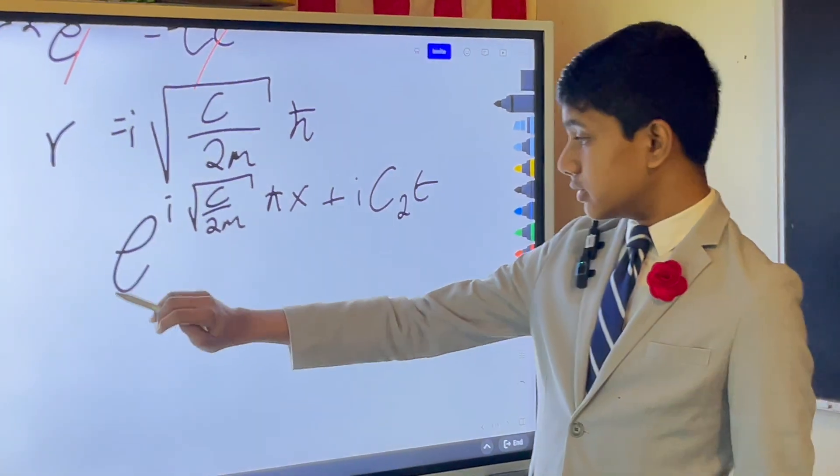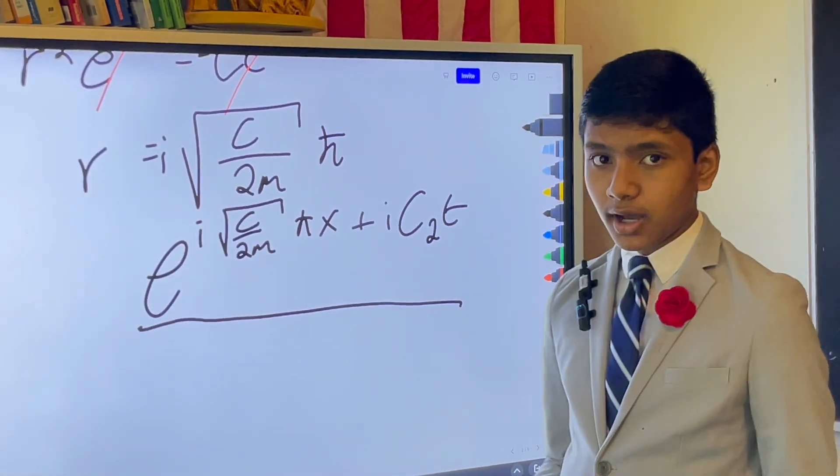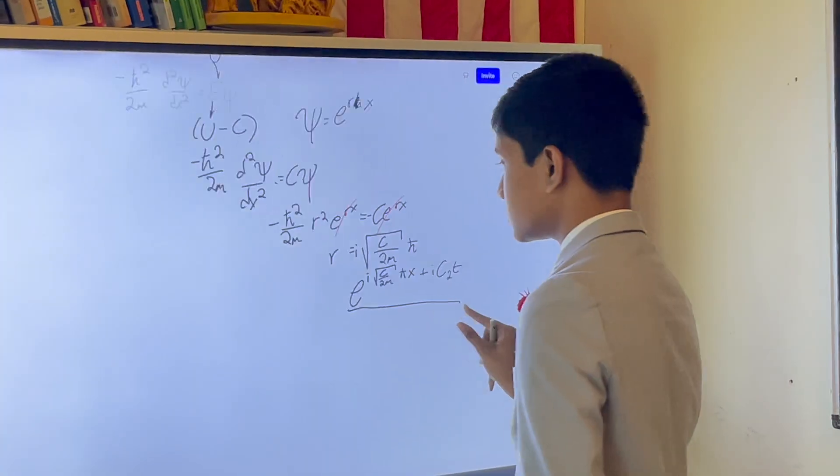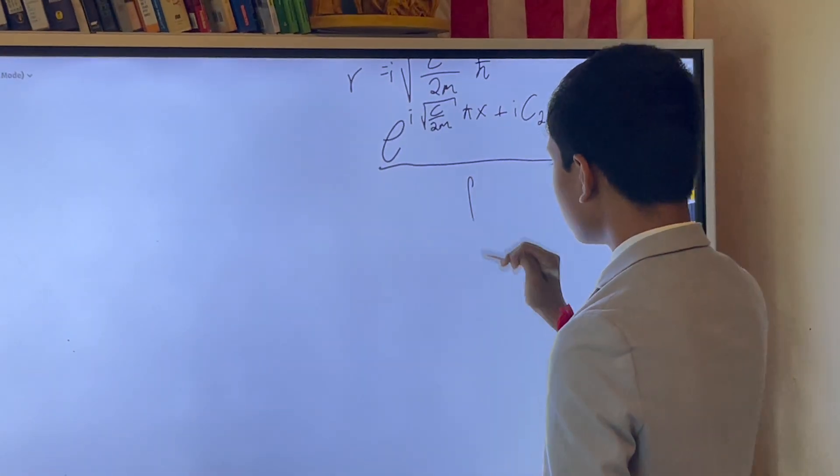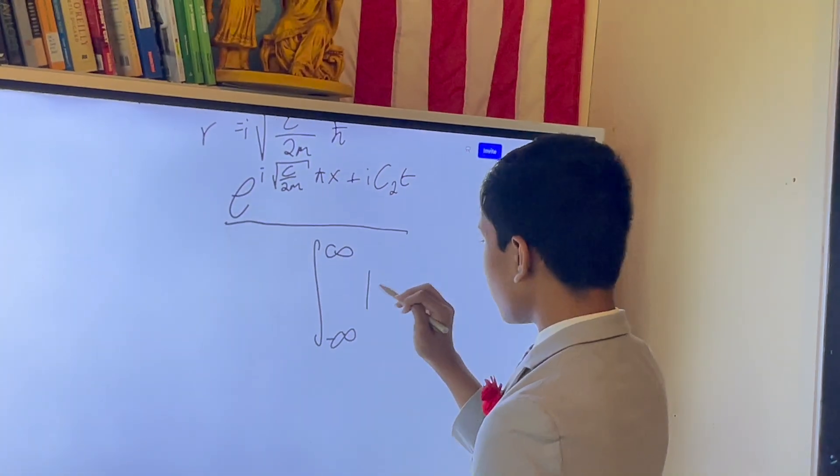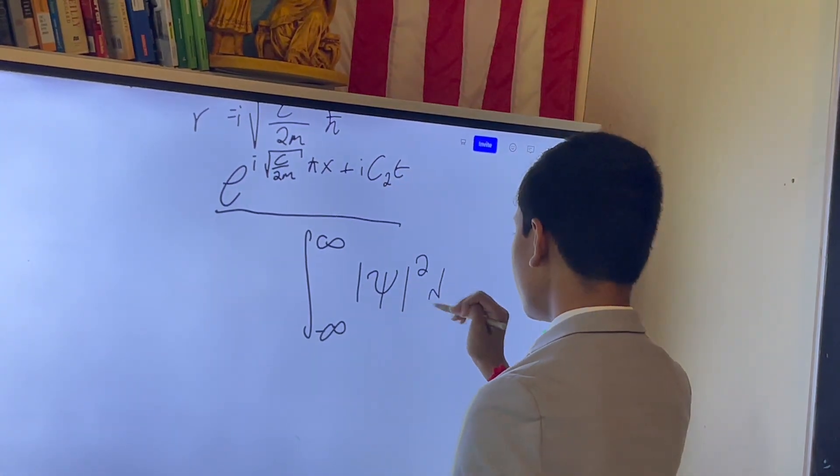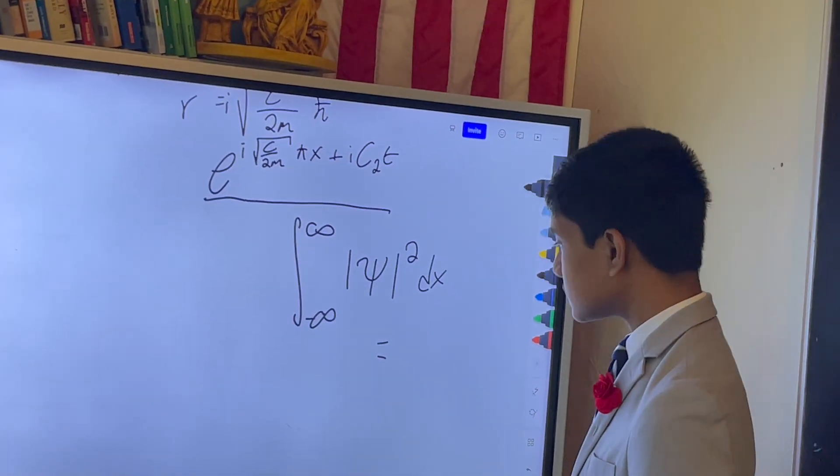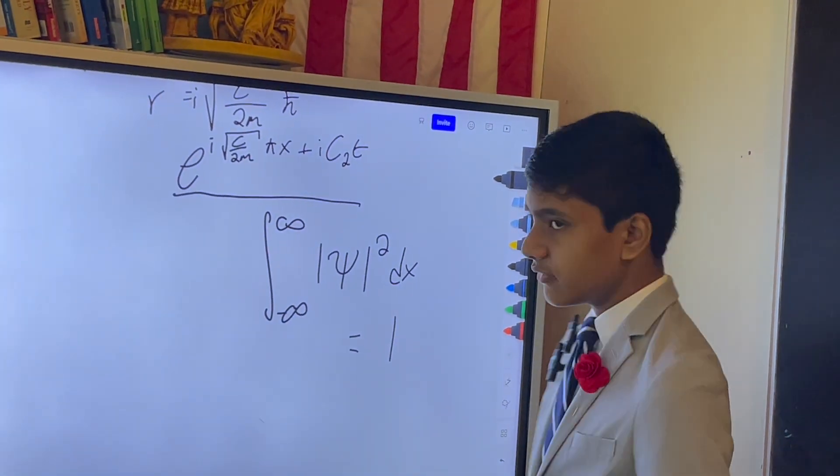And so, is this solution normalizable? Well, what happens when we take the integral over the entire real line? Recall that taking the integral over the entire real line of a wave function should give us 1, if it's a valid wave function.